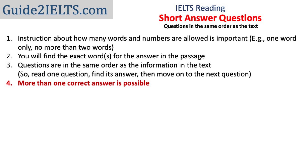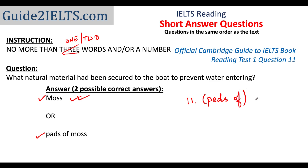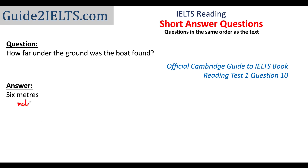In short answer questions, there could be more than one correct answer. For example, with the instruction 'no more than three words and/or a number,' the answer could be 'moss' or 'pads of moss.' If the instruction were 'one word only,' only 'moss' would be correct. In IELTS practice test answer books, multiple acceptable answers are shown. Finally, even though you find the exact word or words for your answer, certain variations are also marked correct — for instance, different spellings. In IELTS, both American and British spellings are acceptable. So the answer 'six metres' or 'six meters' would both be correct.